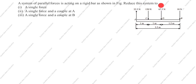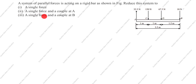We need to reduce the system to: first, a single resultant force; second, a single resultant force and a couple at A (couple means moment); third, a single force and a couple at B (resultant force and moment at B). First, we will find the single resultant force.